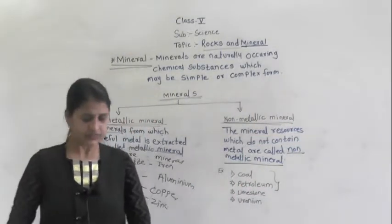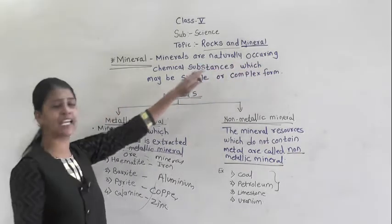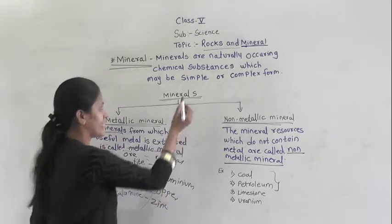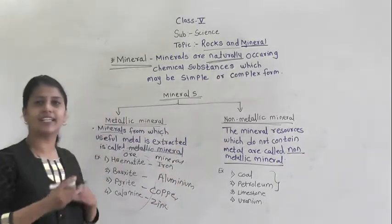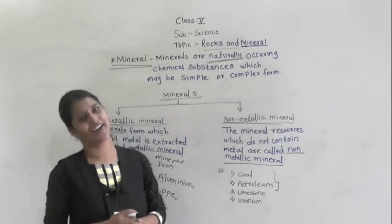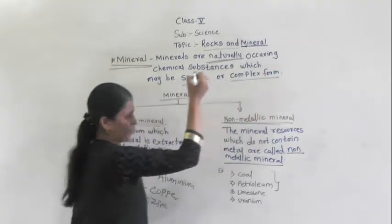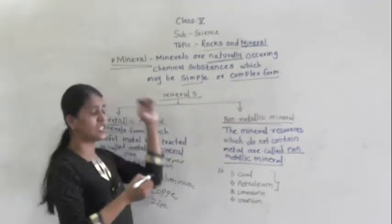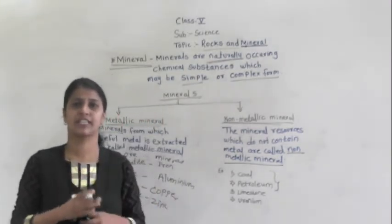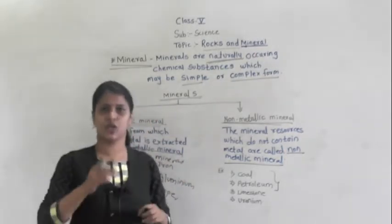So, what are minerals? Minerals are naturally occurring chemical substances. They occur naturally, so they are naturally occurring chemical substances which may be in a simple or a complex form. We get minerals only through natural processes — by the natural process we cannot make minerals.